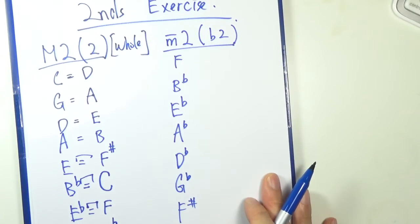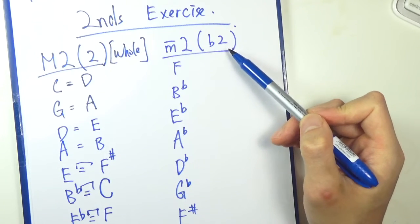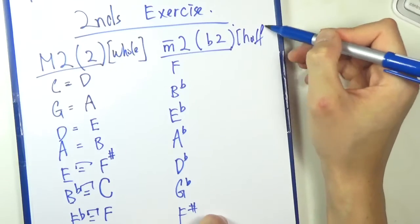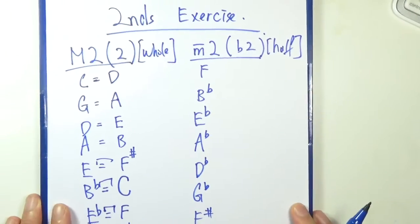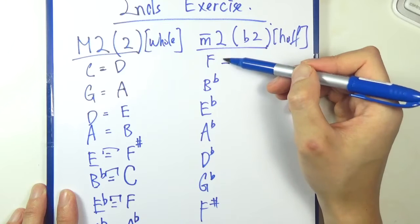So let's move on to minor seconds. Again, flat 2 refers to a minor second, and they should be a half step apart.